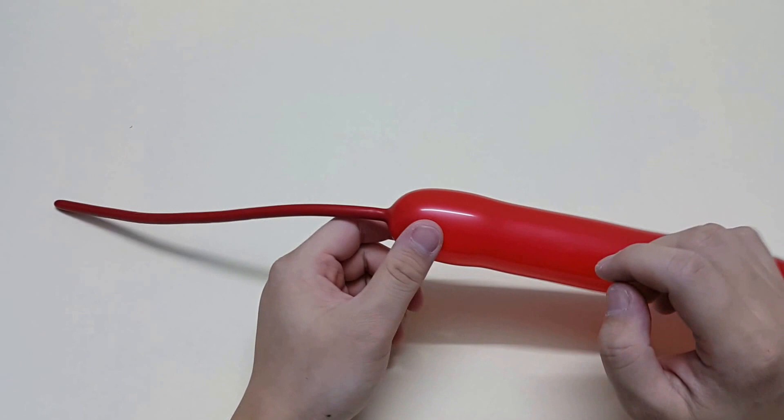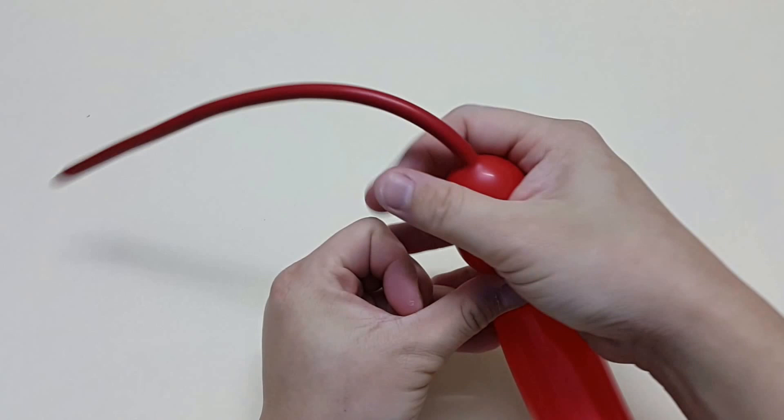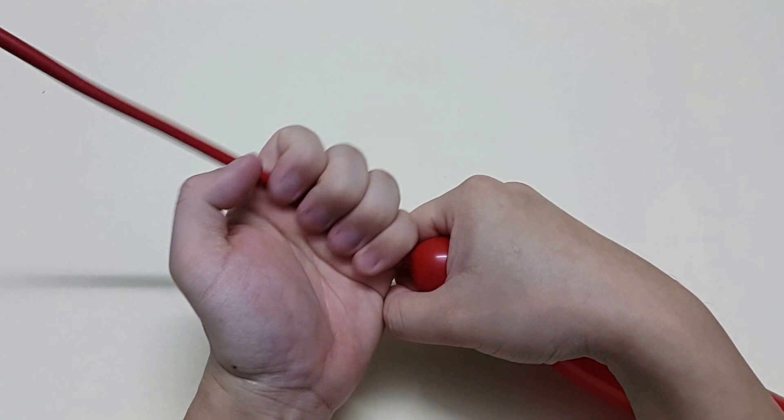So as usual, because the balloon is too long, we're going to create a simple twist over here so my hand can cover this balloon and it's easier for me to push it. So the same thing when we cover over here, the balloon will come out somewhere around here.